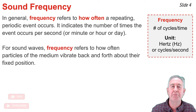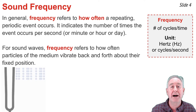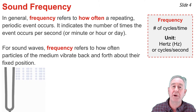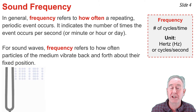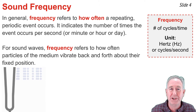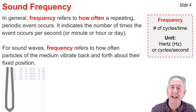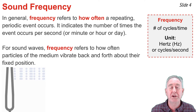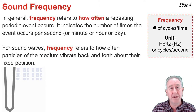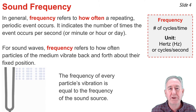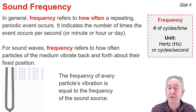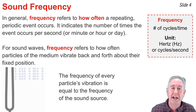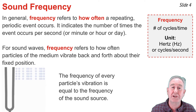For waves, the event happens to be a vibration of a particle about its fixed position. So for sound waves, frequency refers to how often a particle repeats one complete back-and-forth vibrational cycle. We measure it in cycles per second — an equivalent unit is the Hertz, abbreviated Hz. One thing you can be certain of is that the vibrational frequencies of the particles of the medium are perfectly synchronized with the vibrational frequency of the source.